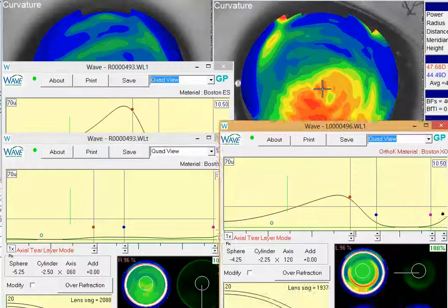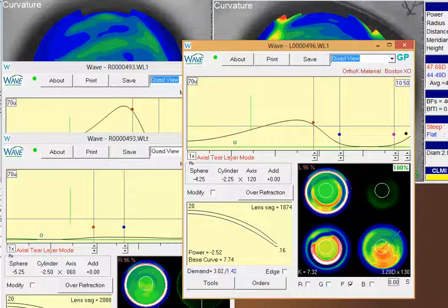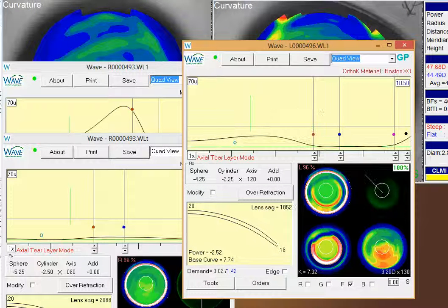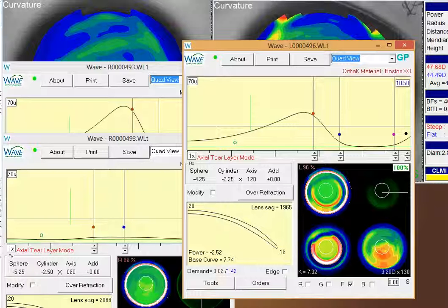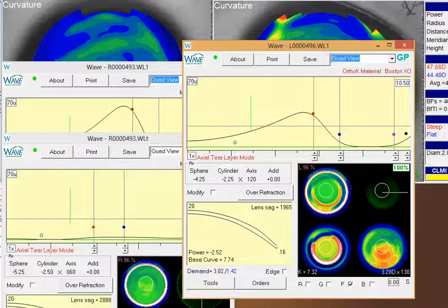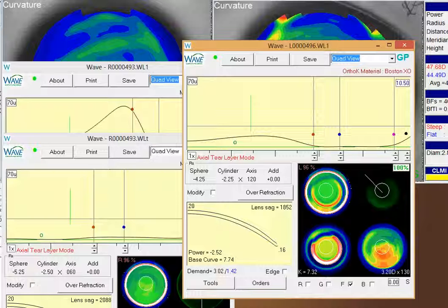The same thing on the left eye holds true. I'm just kind of looking at your design here. Again, it actually looks pretty nice. Again, it's a reverse geometry design where you've got a pretty small landing area out here relatively to the overall lens, and you're probably getting a little seal off later in the day.